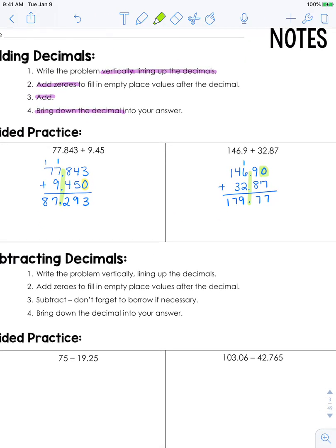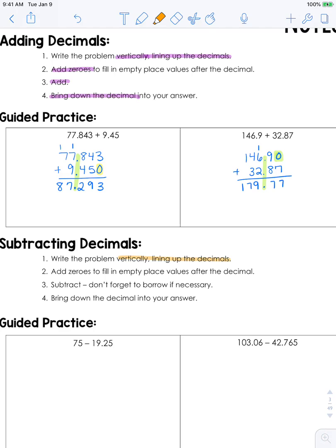Subtracting decimals is the exact same as adding decimals. You will write the problem vertically, lining up the decimals. You will add zeros to fill in the empty place values, and when you're subtracting it's even more important that you add in the zeros than with addition. You're going to subtract and then bring down the decimal.